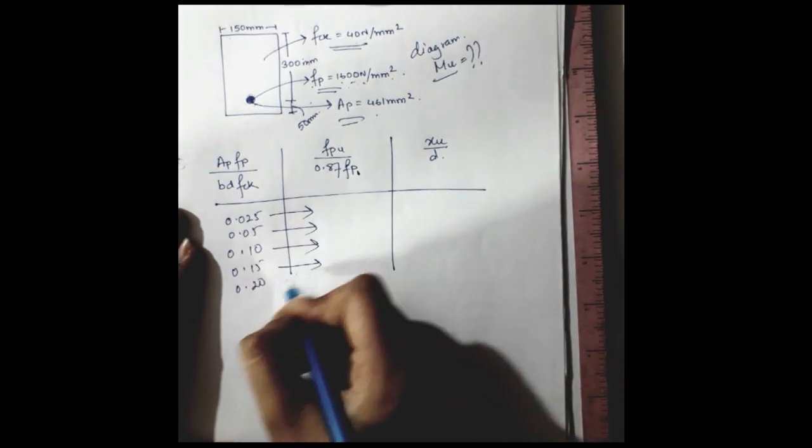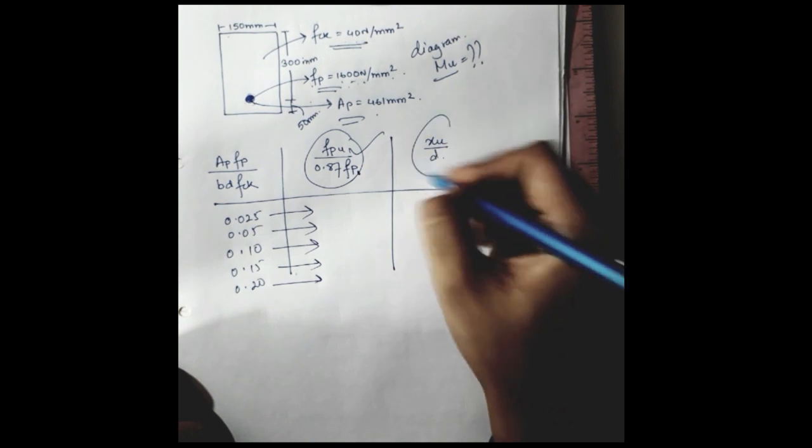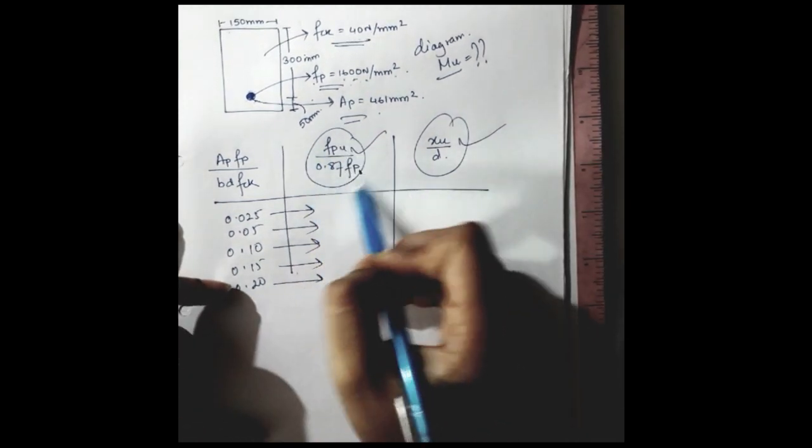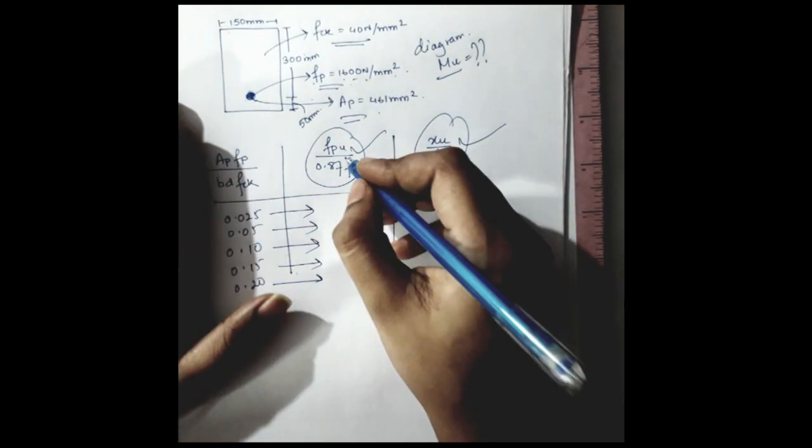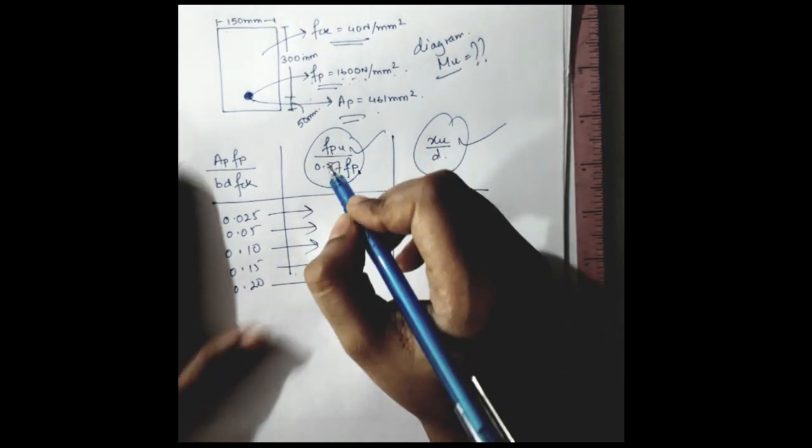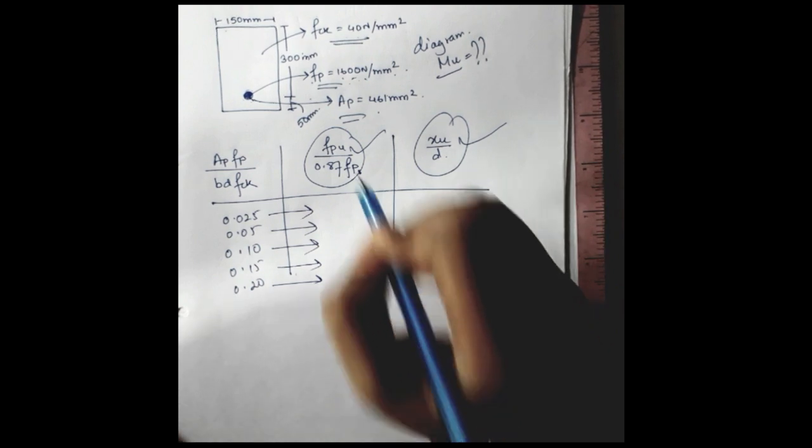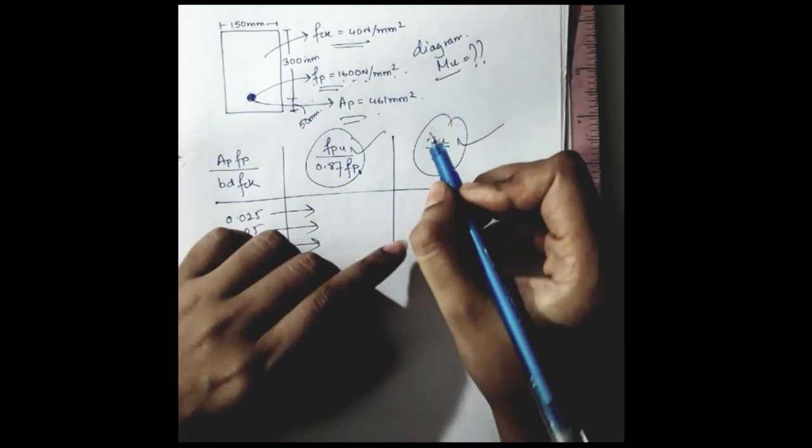And corresponding to this value, there are several values provided for this and this, where this is implying the stress in tension as a proportion of the design strength and xu by d, as you already know, the ratio of the depth of neutral axis to that of the centroid of the tension in the tension zone.